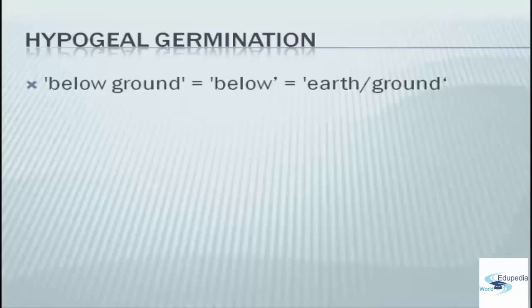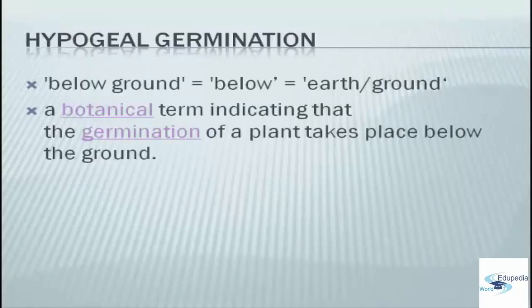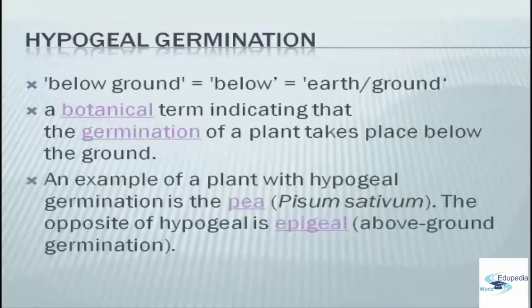Hypogeal means below the ground — below the earth's surface. This is also a botanical term indicating that the germination of a plant takes place below the ground. An example of a plant with hypogeal germination is the pea, and the opposite of hypogeal is epigeal.